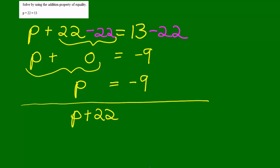So let's take P plus 22 equals 13, and in order to nullify the 22, I'm going to add negative 22 to both sides of the equation because negative 22 is the opposite of positive 22. When I add negative 22 to positive 22, I get 0.